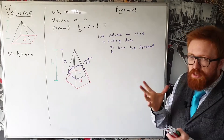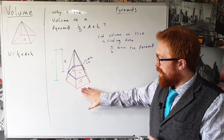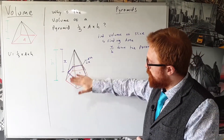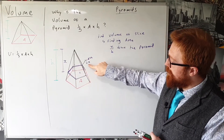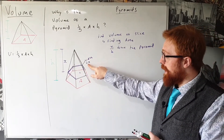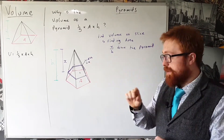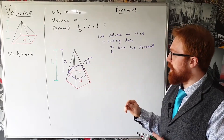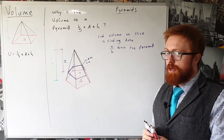That's got two steps really: we need to find the area of this cross-sectional shape — in this case it's a pentagon, but it could be any shape — and then we need to multiply it by the width of the slice, which is delta x. I've called it delta x because it's a small change in x, and it's really, really small.